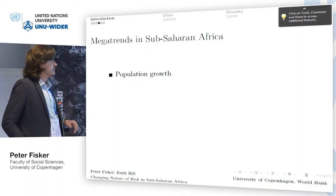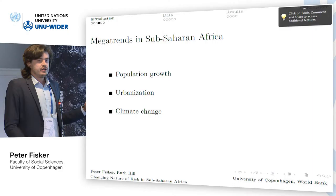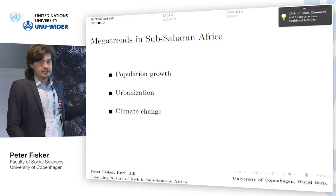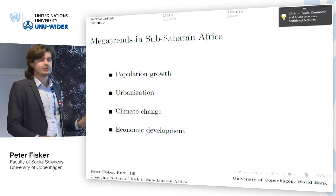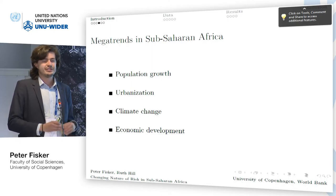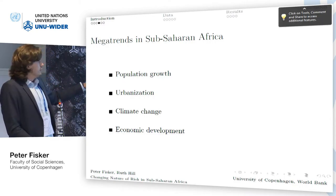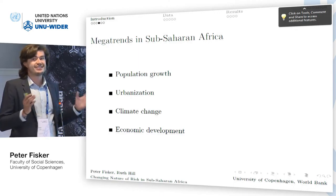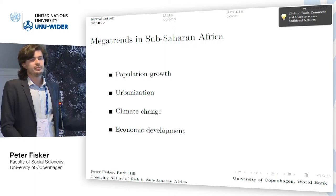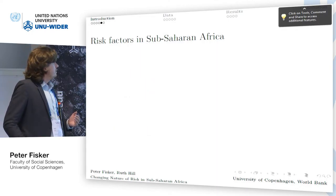There are a few so-called mega trends in sub-Saharan Africa. We have population growth — it's the continent that sees the largest population growth these years — and a lot of urbanization. Coupled with this, we know the climate is changing, with global warming particularly true for many places in sub-Saharan Africa. On the other side, we also observe economic development, with most countries in Africa seeing high growth rates. Population growth will increase exposure to hazards, climate change might increase the hazard component, whereas economic development might reduce vulnerability.